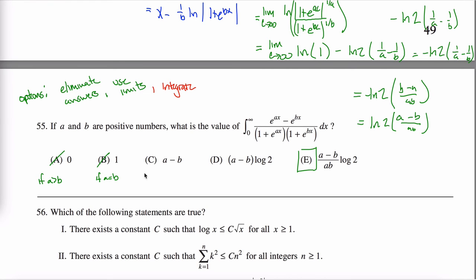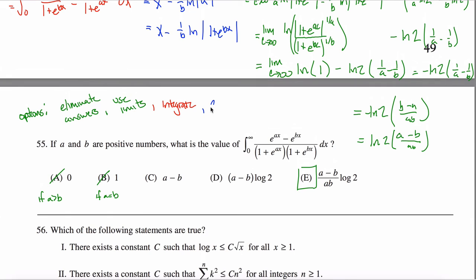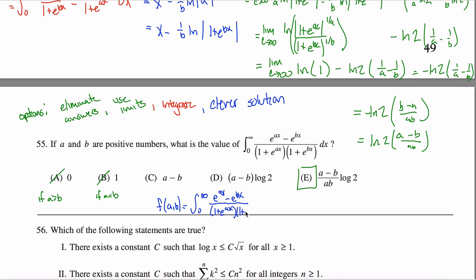There's another clever way to solve this, which I read online and want to give props to whoever came up with it. The idea is to view the integral as a function F(A,B), a function of the two variables A and B. F(A,B) equals the integral from zero to infinity of (e^(AX) minus e^(BX)) divided by (one plus e^(AX))(one plus e^(BX)) DX, where A and B are both positive.